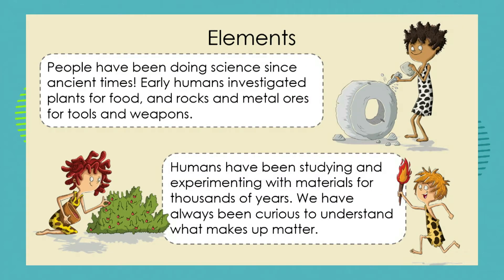People have actually been doing science since ancient times. What you are doing in your natural sciences class is not new. Early humans investigated plants for food. They investigated rocks and the metal ores inside the rocks to make tools and weapons. So humans have been studying and experimenting with materials for thousands of years — which of these materials can burn, or which of them don't burn?